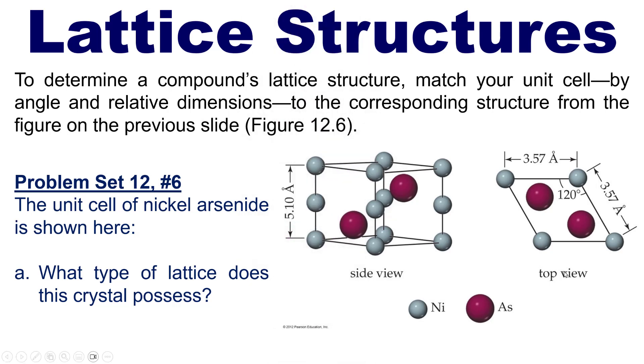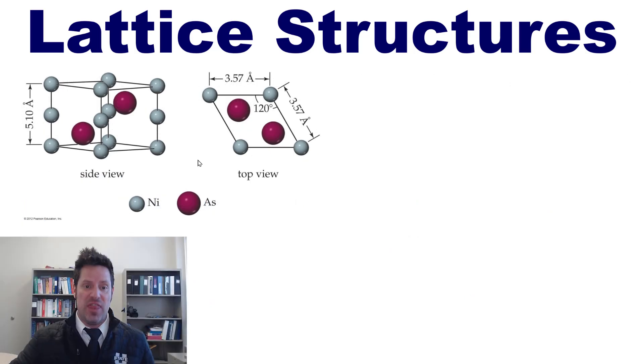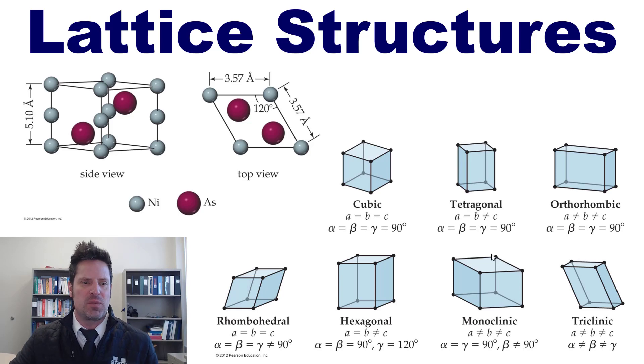So in order to do this, we of course need to take a look at this figure and compare it with the lattice structures I showed you a moment ago. You'll notice looking at the unit cell from this angle, its height is 5.10 angstroms. But looking down the barrel at it from a top bird's eye point of view, its width and depth are 3.57 angstroms.